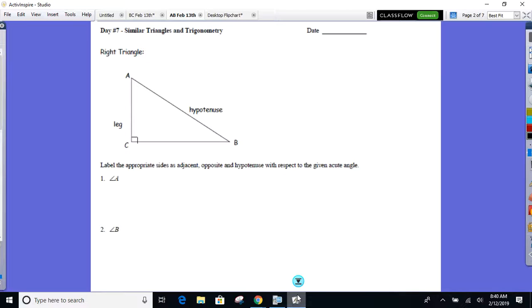Let's take a look at number one. I'm looking at angle A, everybody. Look at angle A. What leg, what side is adjacent next to angle A? And when I say next to, don't give me the hypotenuse. When I say adjacent, I want a leg. So what leg is adjacent to angle A? AC. The adjacent side is AC.